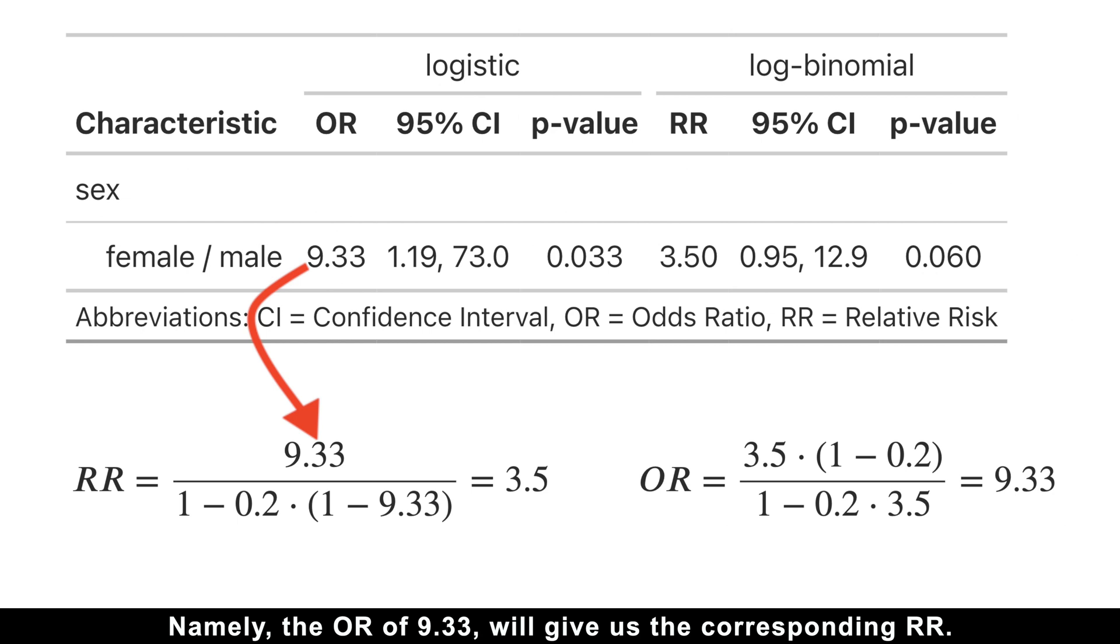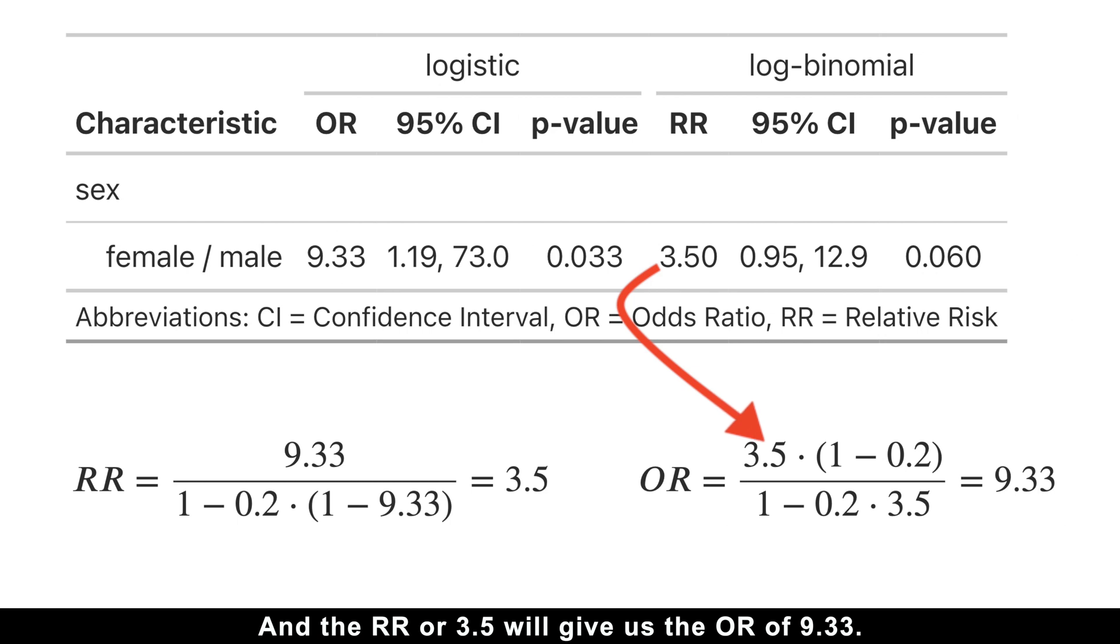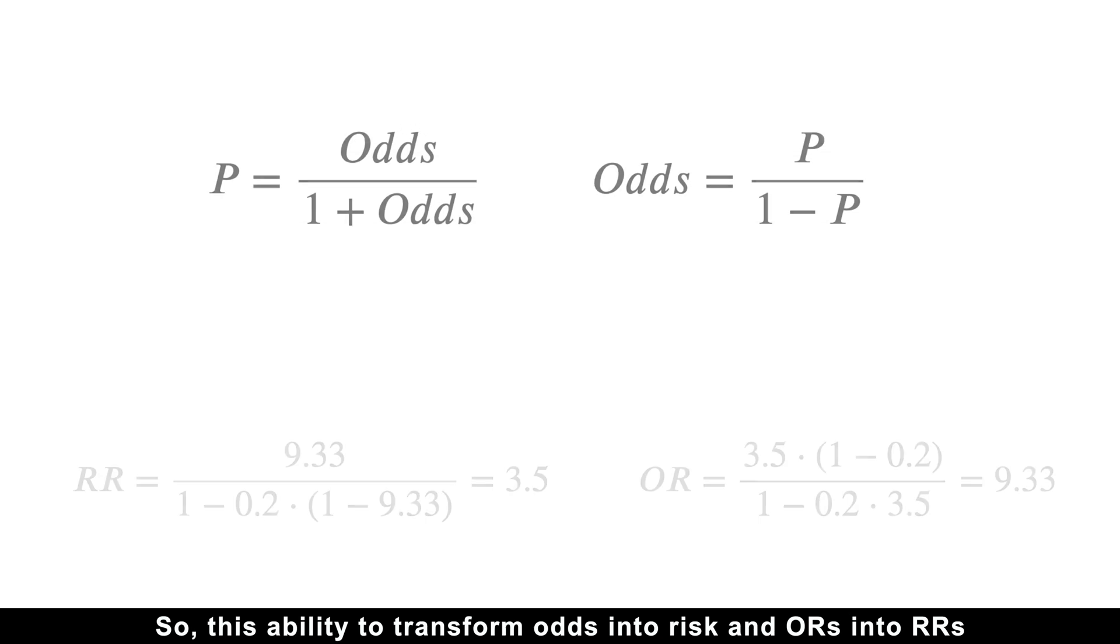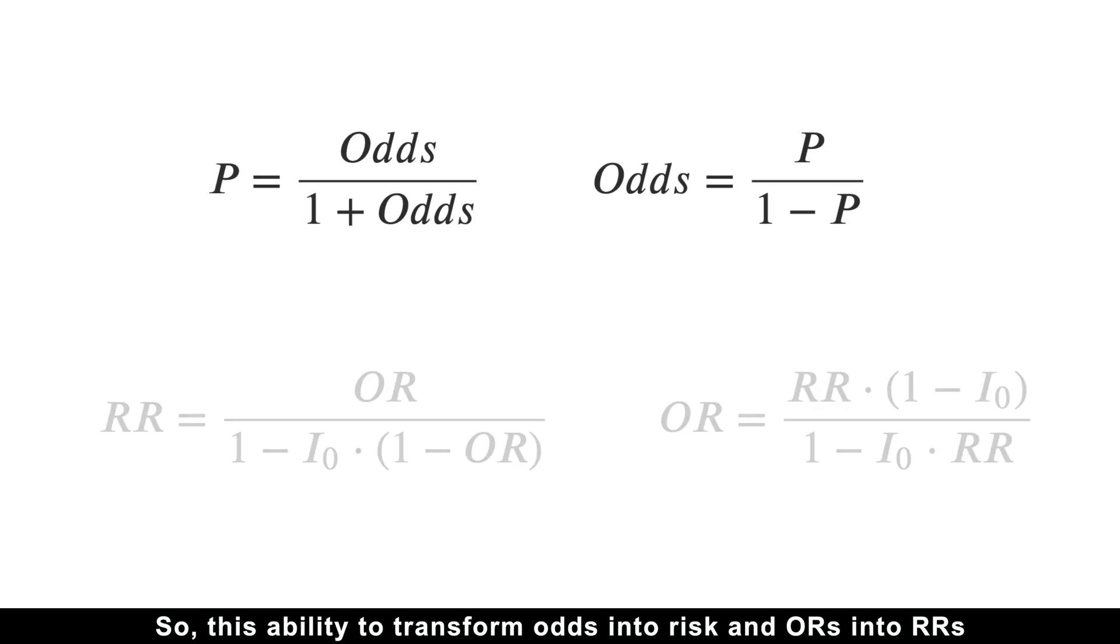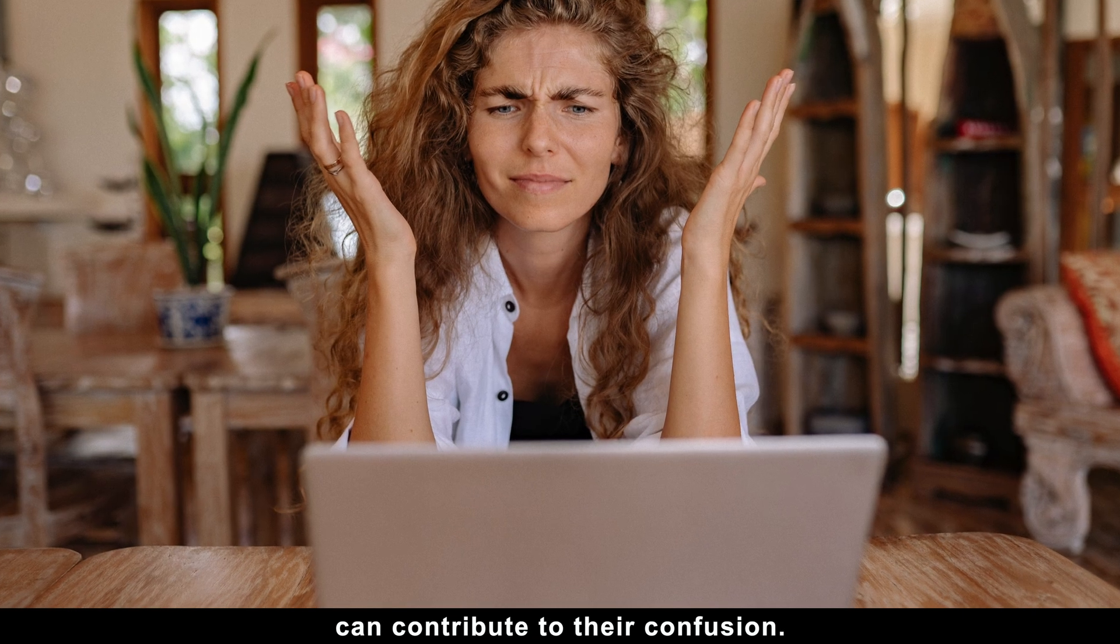Namely, the odds ratio of 9.33 will give us the corresponding risk ratio and the risk ratio of 3.5 will give us the odds ratio of 9.33. So, this ability to transform odds into risk and odds ratios into risk ratios can contribute to their confusion.